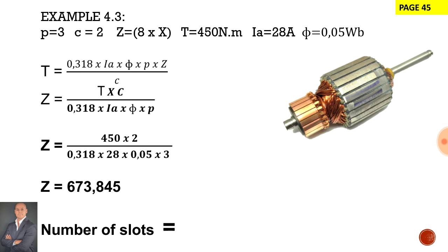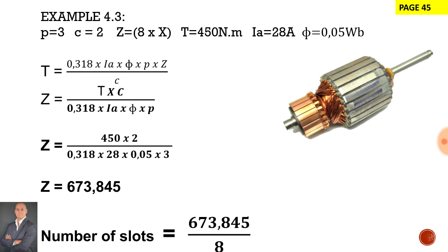So to calculate the number of slots, it will be the total number of armature conductors divided by the conductors per slot, and therefore we have 84.23 slots.